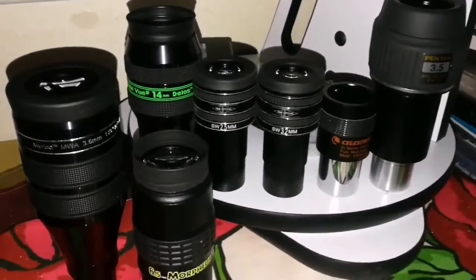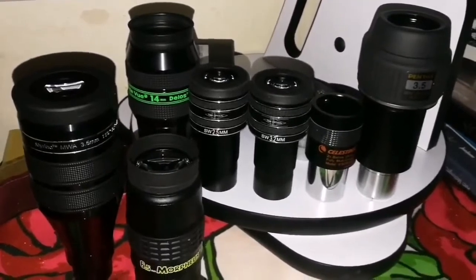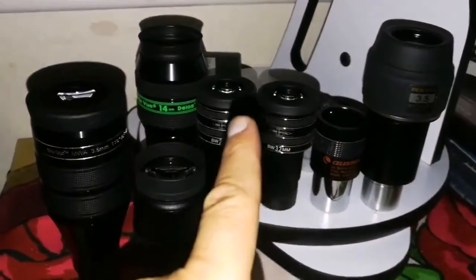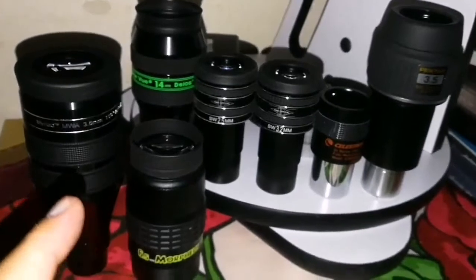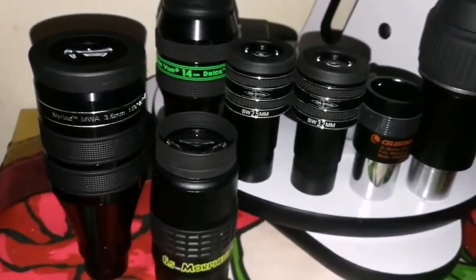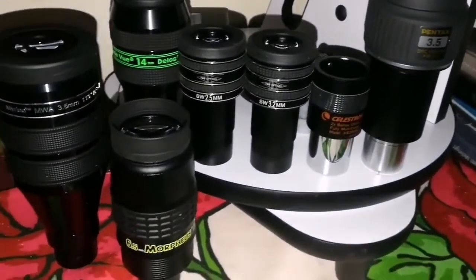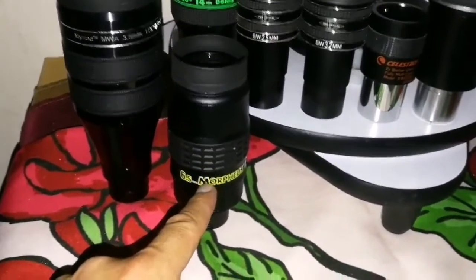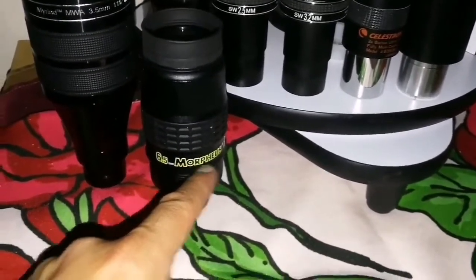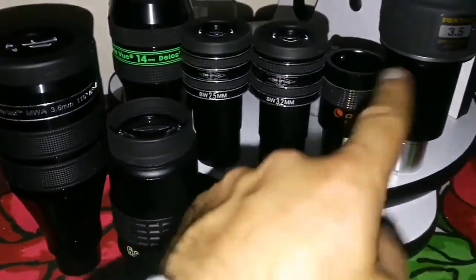So here I've tested and observed planet Jupiter and planet Saturn with these eyepieces, in total six, and I use the Delos as a finder. What can I say about them? The best picture, the best image I had was with the Pentax 3.5, closely matched by this 3.5, closely matched by the Barlow 6.5 Morpheus, and really close to this 3.2 and 2.5 which is a different price range.